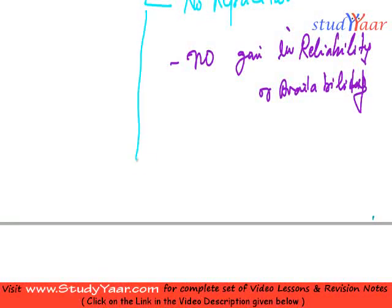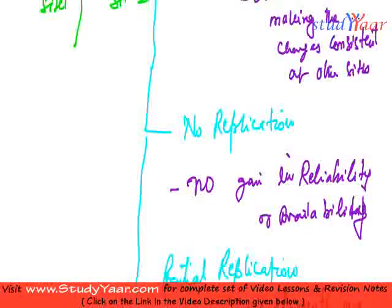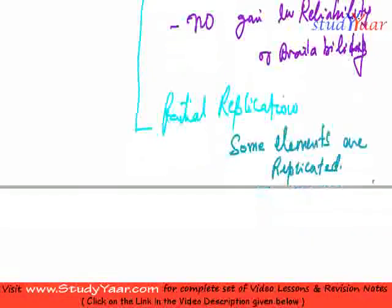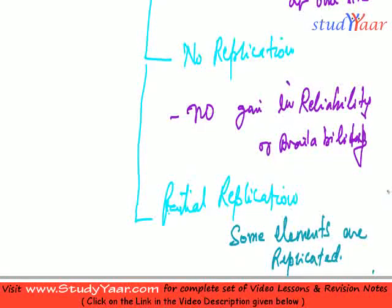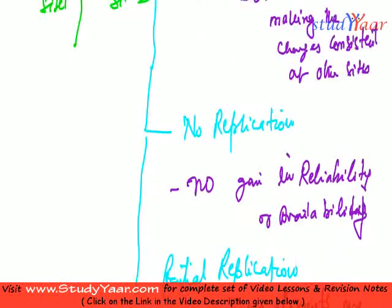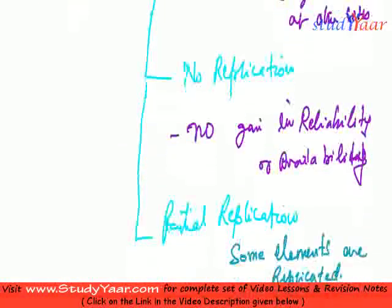The third type is partial replication. Here, not the entire database is replicated but some elements are replicated. It is a mix of the above two schemes. The overhead is not going to be as high as in a fully replicated system because only some elements are replicated, and obviously there would be some gain in reliability and availability for the elements which are replicated.